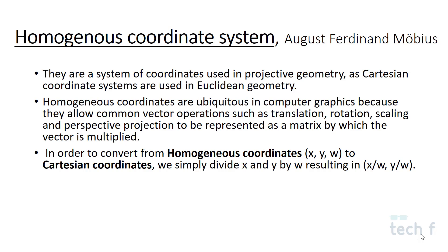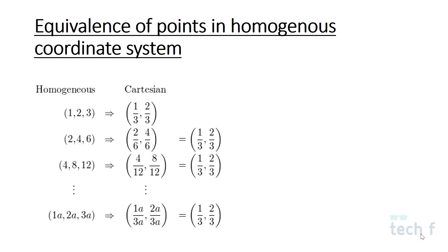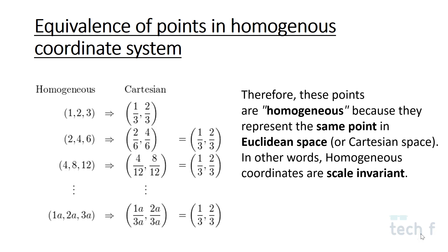For example, if it is a 2D coordinate system, we represent the 2D coordinate system's homogeneous coordinates with three values: X, Y, W.